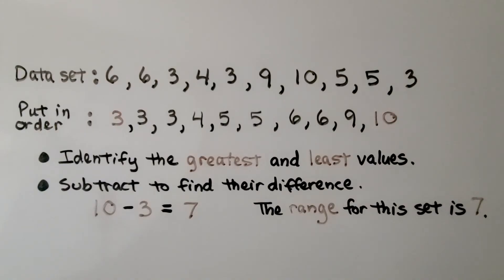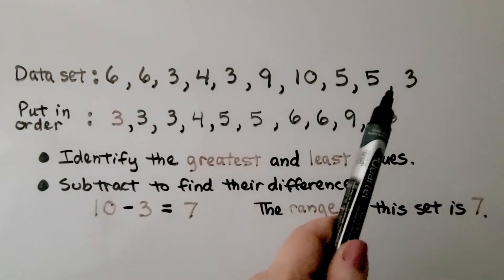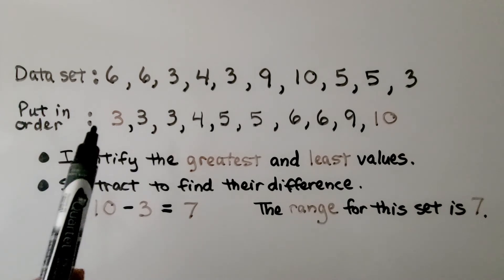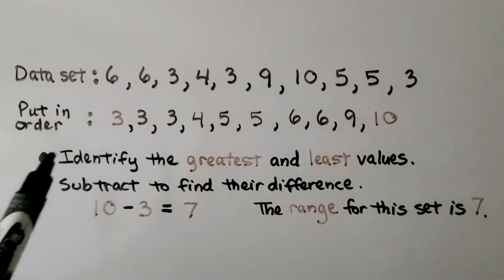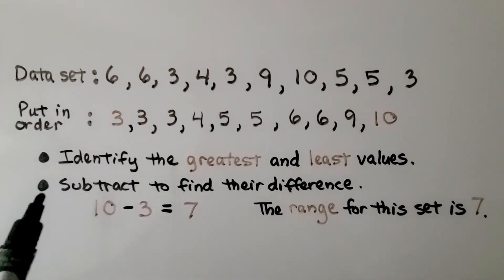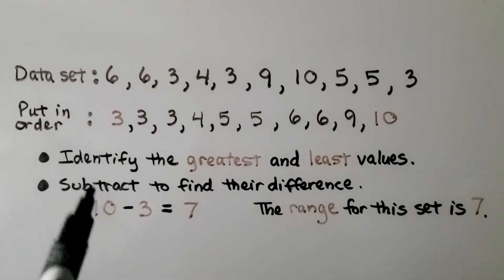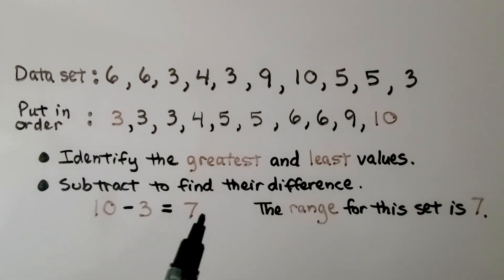Here we have a data set, and you can see they're not in order. We put them in order. 3 is the lowest number and 10 is the greatest number. We've identified the greatest and least values. Now we subtract to find their difference. We have 10 and 3. We do 10 minus 3, it's equal to 7. The range for this set is 7.